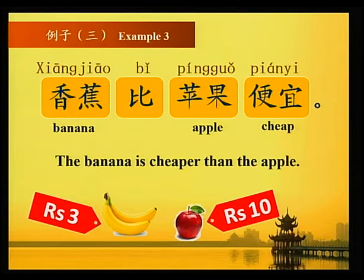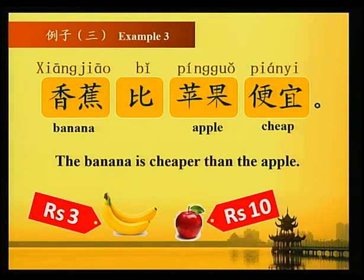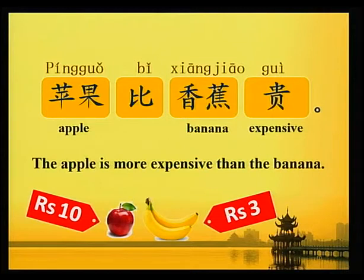例子三 Example three: 香蕉三鲁比一根，苹果十鲁比一个，所以 香蕉比苹果便宜 — the banana is cheaper than the apple. 苹果比香蕉贵 — the apple is more expensive than the banana.